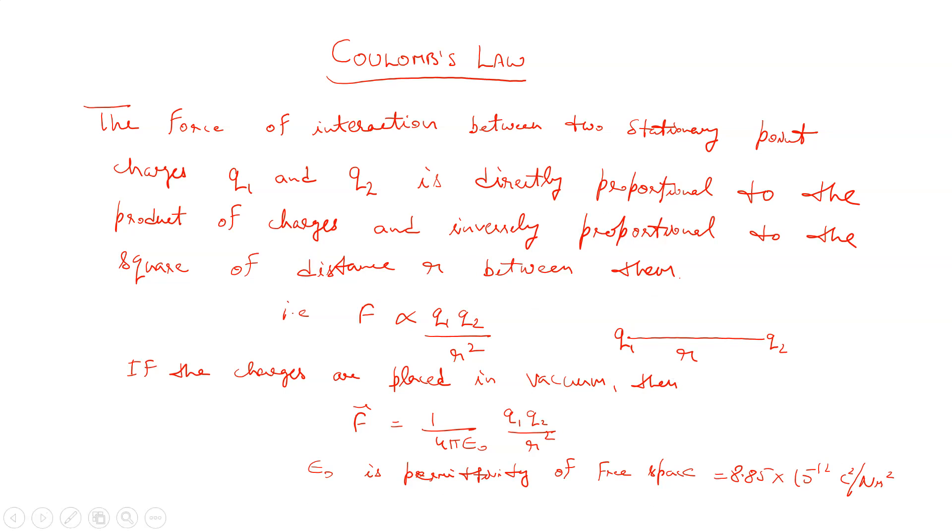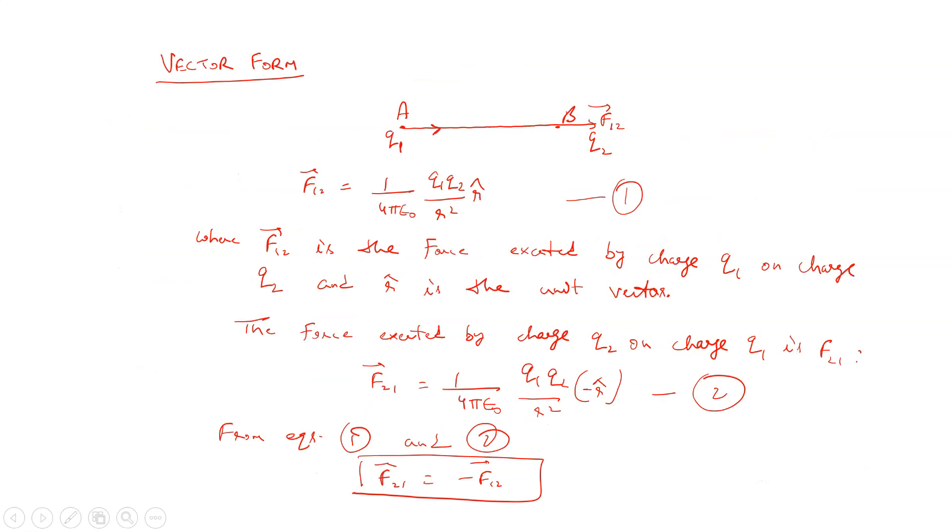Vector form of this law. For example, we have two point charges positioned at point A and B. F12 is the force exerted by charge q1 on charge q2, and r̂ is the unit vector. Then F12 equals 1 by 4π epsilon naught q1 q2 by r square r̂. r̂ is the direction of the force.